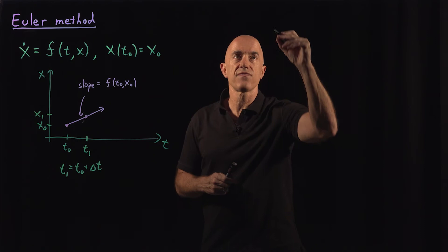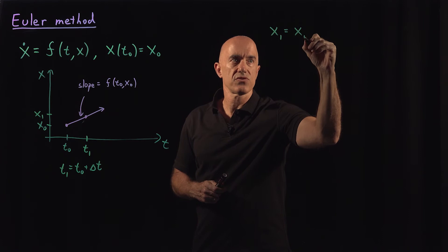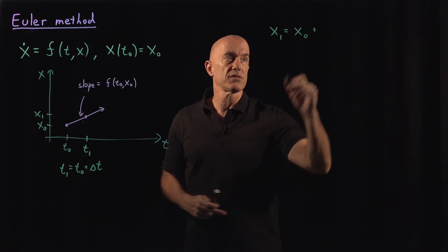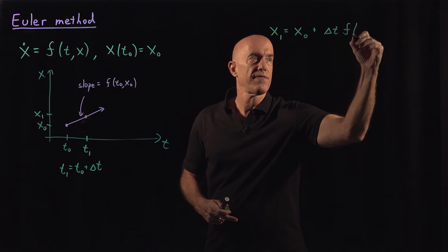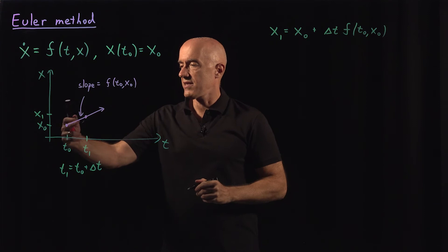So we can write down the formula for that. So x1 is equal to x naught plus delta x over delta t times delta t. So it's delta t times the derivative, which will be f of t naught x naught. That says we march along the tangent line.